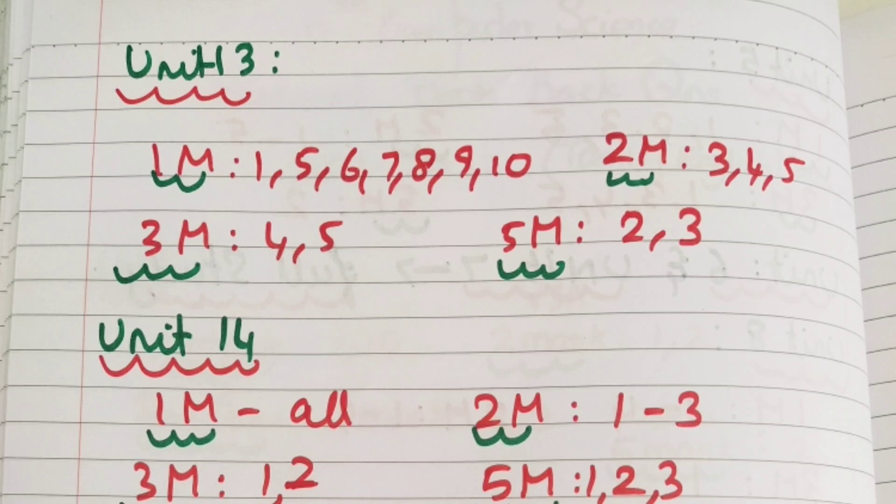Unit 14: 1 mark — 2 mark is 1 in length. 3 mark is 1 in length. 5 mark is 1 in length.